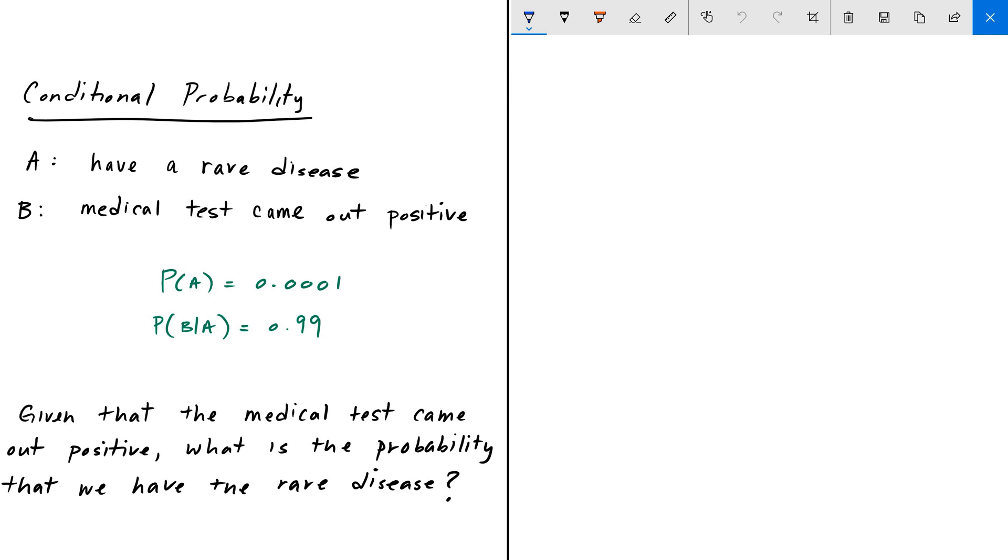Suppose that we have two events, event A and event B. Event A is the event that we have a rare disease, and event B is the event that we went to the doctors, got a medical test done, and it came out positive. Given that the medical test came out positive, we are looking for the probability that we have a rare disease. So we're looking for the probability of A given B.